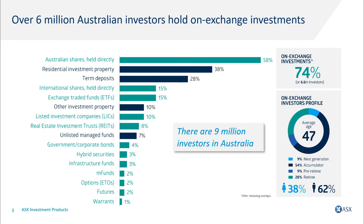There are actually over six million Australians that hold on-exchange investments. Australian shares are the most popular investments held by Australian investors. What we are endeavouring to do is help those investors who probably already hold Australian shares use other products to diversify into global equities and fixed income, as well as index tracking or active investment strategies. While there's been great uptake, we still think there's work to be done to help investors achieve diversification.